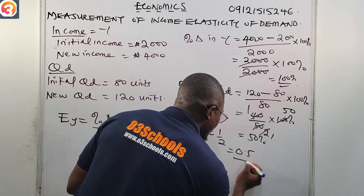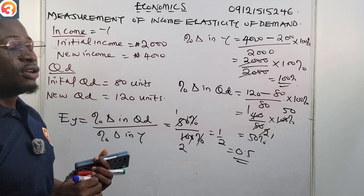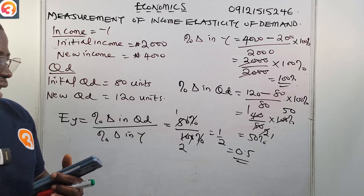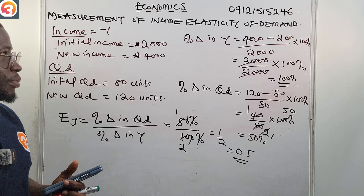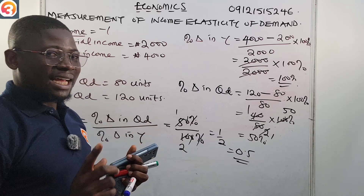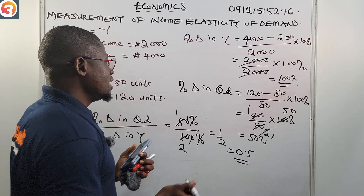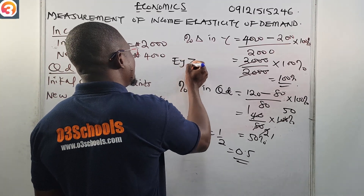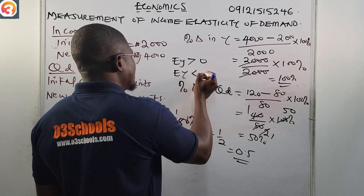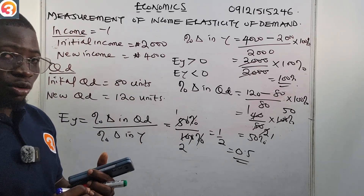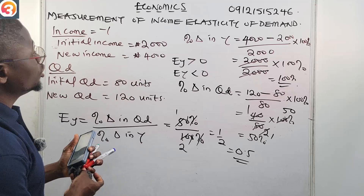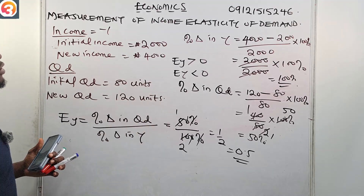One over two in decimal is 0.5. So our answer is 0.5. This is positive income elasticity, since EY is greater than zero. EY greater than zero means positive income elasticity; EY less than zero means negative income elasticity. This is clearly positive, so the answer is option A: 0.5.